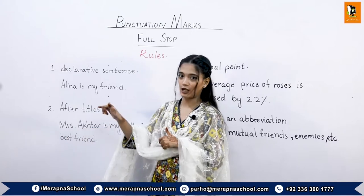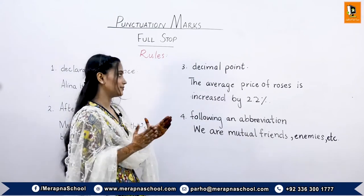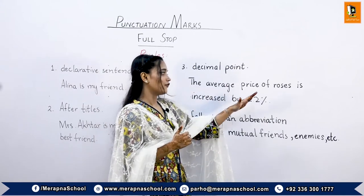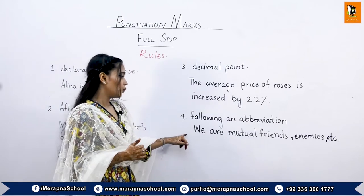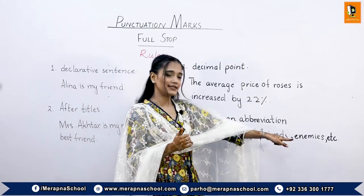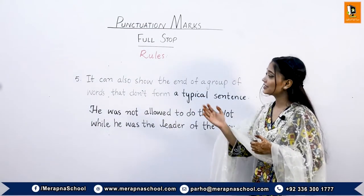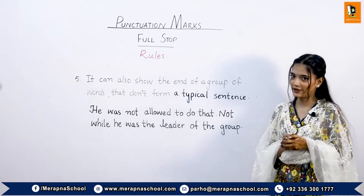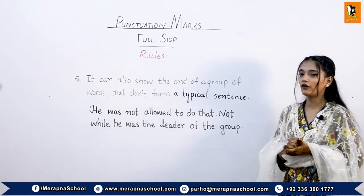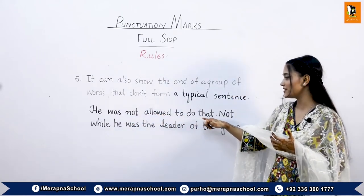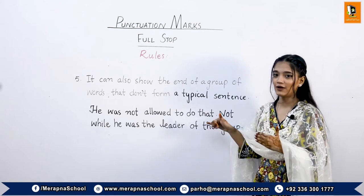The third rule is between decimal points — for example, 'The average price of roses has increased by 2.2 percent.' The fourth rule is following an abbreviation, such as approx., etc. The fifth and last rule is that a full stop can also show the end of a group of words that don't form a typical sentence — for example, 'He was not allowed to do that. Not while he was the leader of the group.'